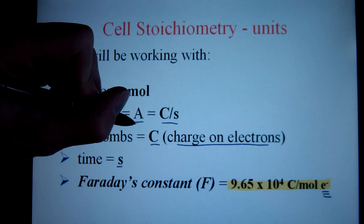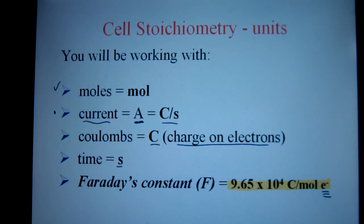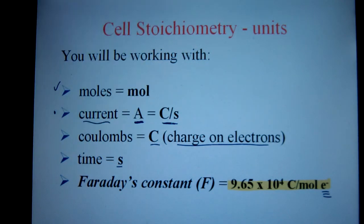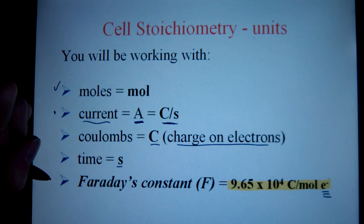You'll see current typically given to you in amps. Well, an amp isn't very useful, but you can convert that directly into a Coulomb per second. So one amp is one Coulomb per second. What's a Coulomb? A Coulomb represents charge on electrons. It says here your time must be in seconds.